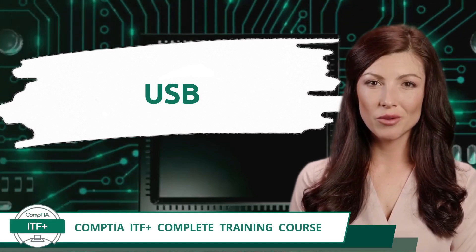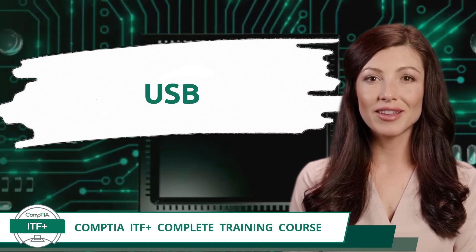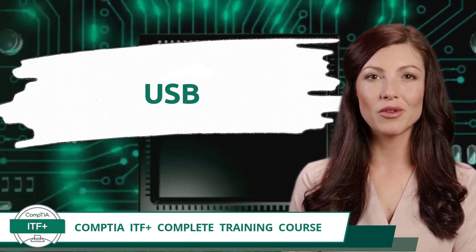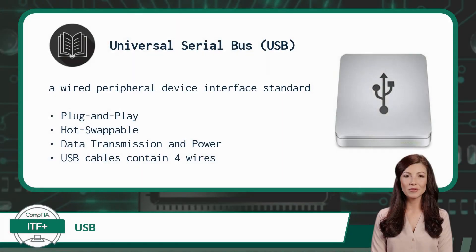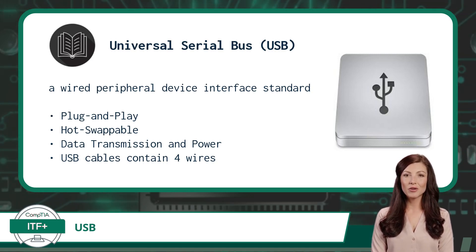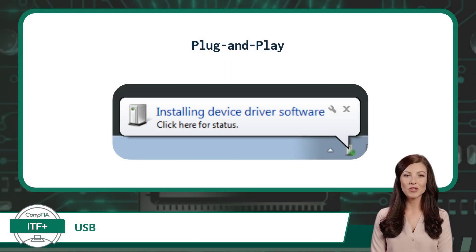CompTIA ITF+ complete training course, exam objective 2.1: classify common types of input and output device interfaces. USB, or Universal Serial Bus, is a wired peripheral device interface standard that was released in 1996. USB has been adopted universally — you can find USB in use just about everywhere. USB also has a host of features.